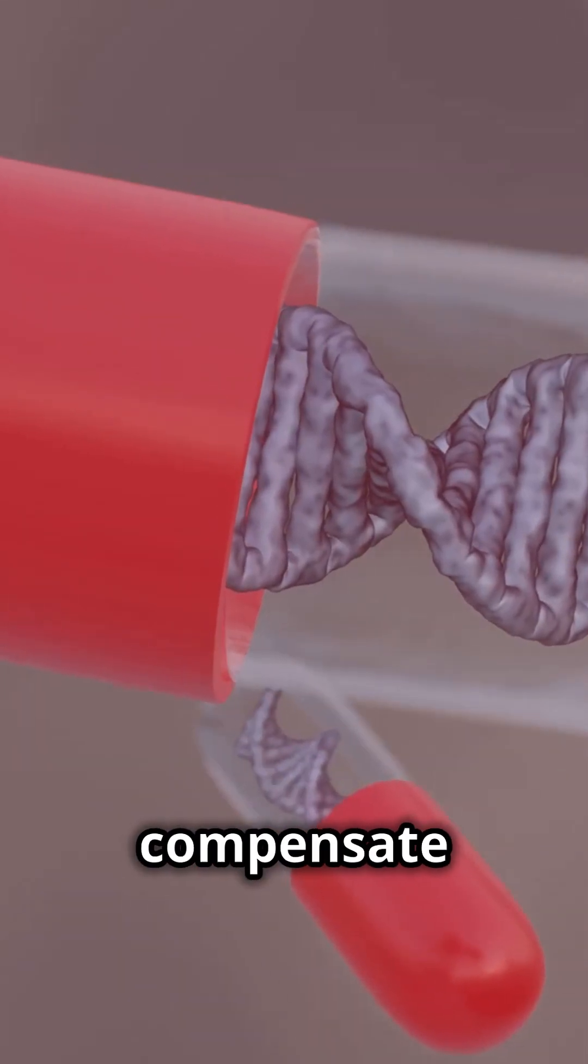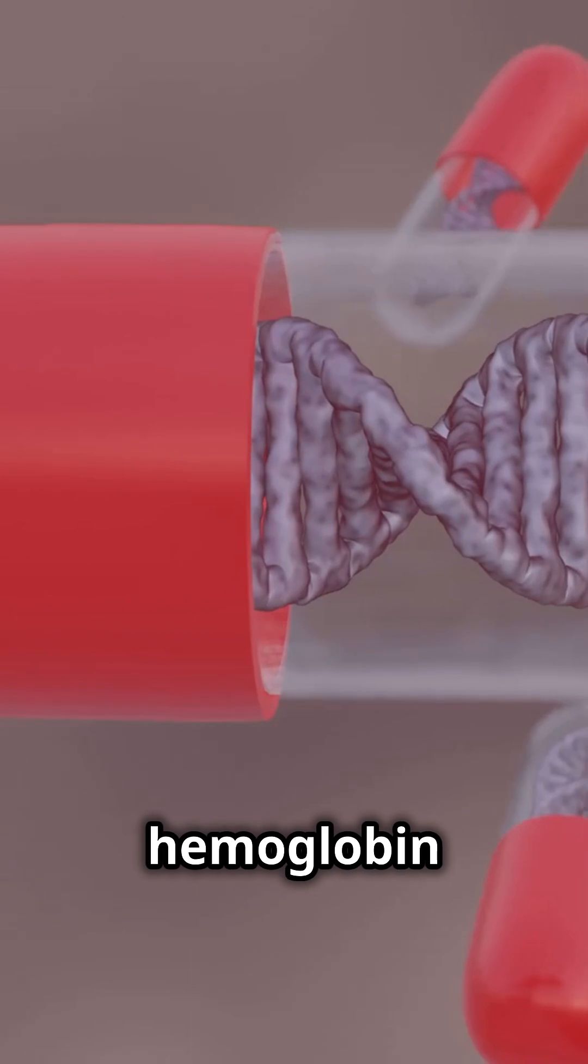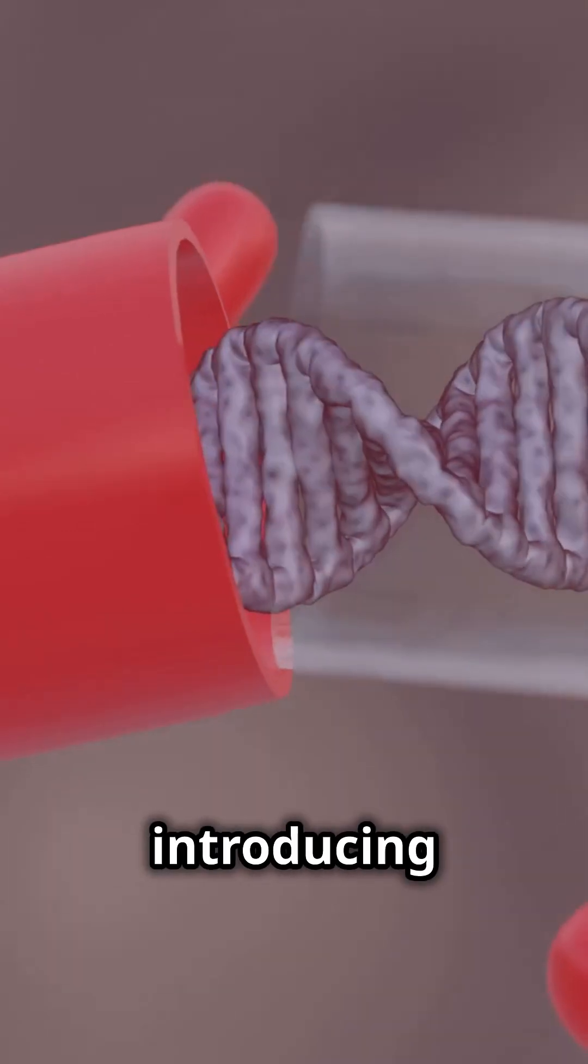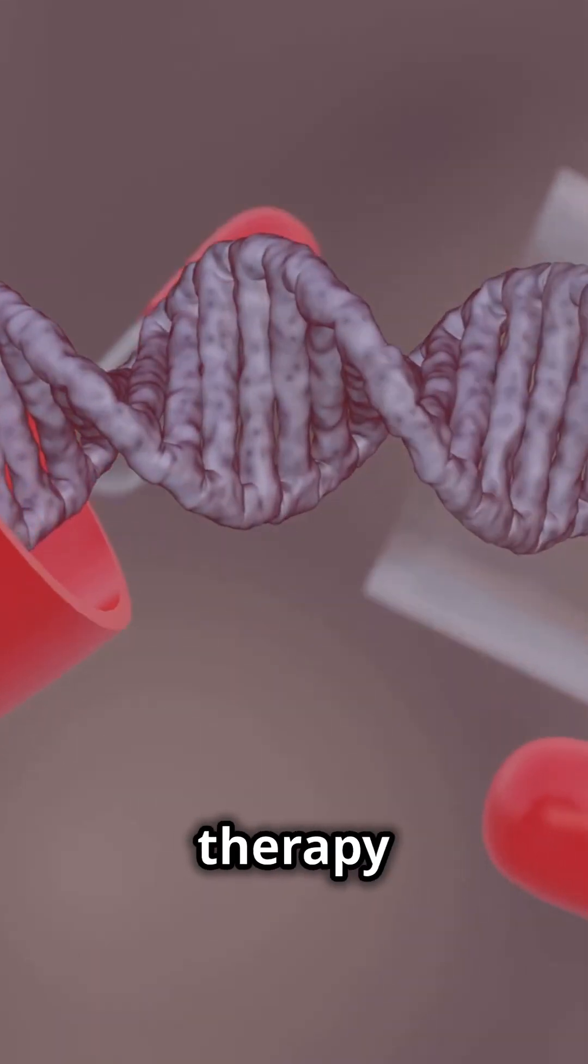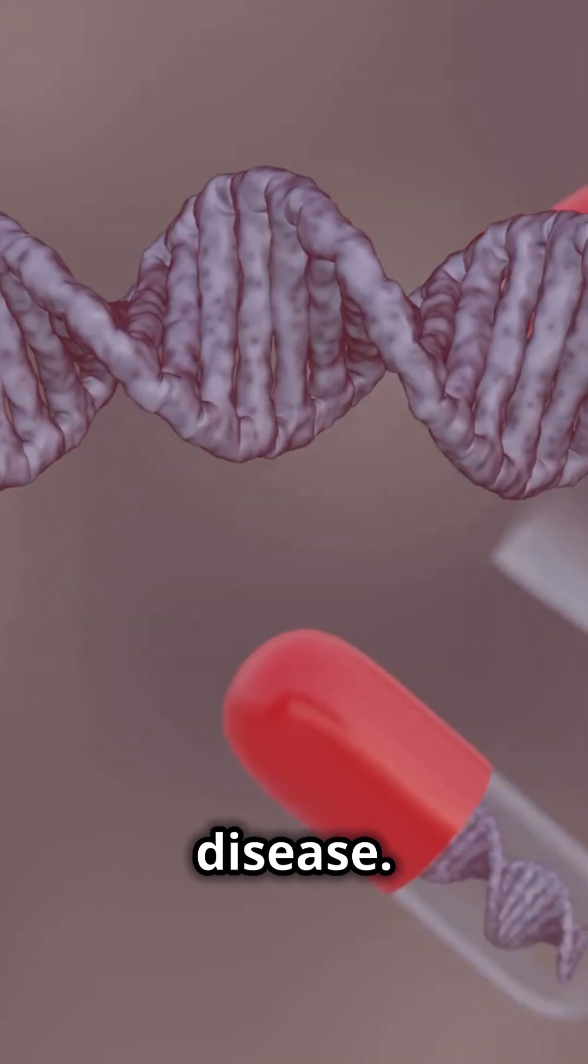Gene therapy aims to correct or compensate for the mutation in the haemoglobin gene. By introducing a functional gene or modifying the existing one, this therapy targets the root cause of the disease.